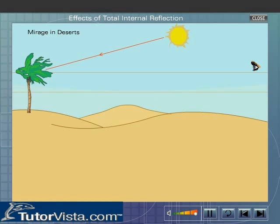A light ray coming downwards from any object passes through layers of air of gradually decreasing density. At each layer, refraction takes place and the light ray bends away from the normal. The angle of incidence continues to increase until,